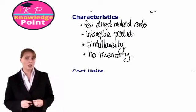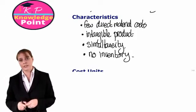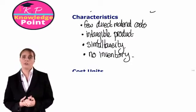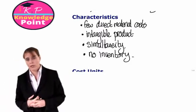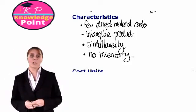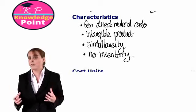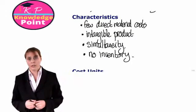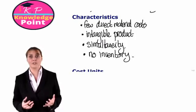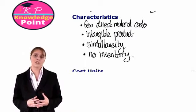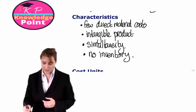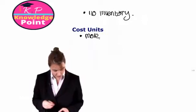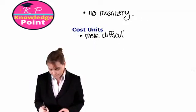Before we get on to a question, we are just going to consider one of the key issues in a service costing environment, and that is the cost unit. When we looked at cost units earlier in the course, we said that a cost unit was a unit of product or service for which costs could be ascertained. In a manufacturing environment, it's very clear — if we are manufacturing and selling tables, our cost unit is the table. But in a service costing environment, cost units are more difficult to identify.